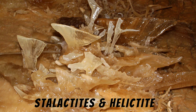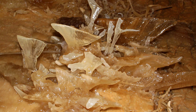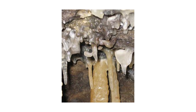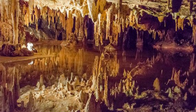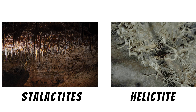Stalactites and Helictites: Water containing limestone in solution feeds through the roof in the form of a continuous chain of drops. A portion remains on the roof and on evaporation of water, a small deposit of limestone is left behind, contributing to the formation of a stalactite growing downwards from the roof. Usually the base is broader than the free end. The ones that descend vertically are known as stalactites, whereas the ones that extend horizontally or diagonally are known as helictites.